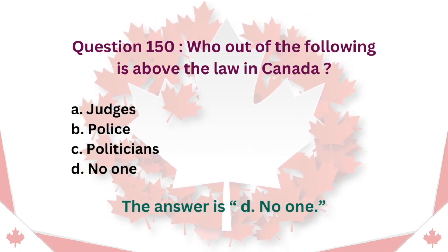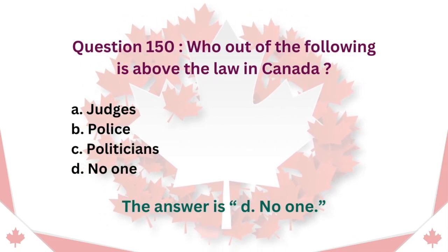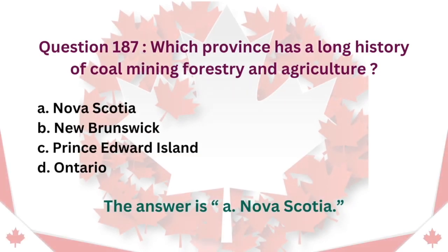Question 150: Who out of the following is above the law in Canada? A. Judges. B. Police. C. Politicians. D. No one. The answer is D. No one.